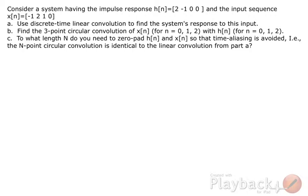Part B, find the three-point circular convolution of x of n and h of n. Part C, to what length n do you need to zero-pad h of n and x of n so that time aliasing is avoided?